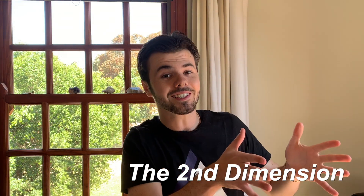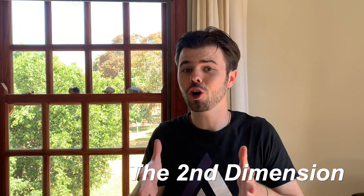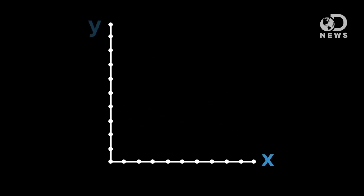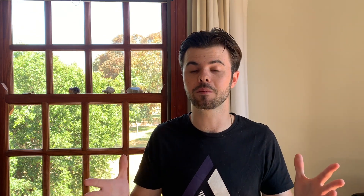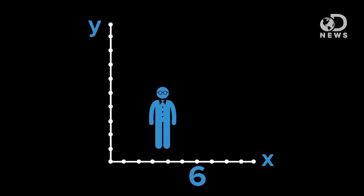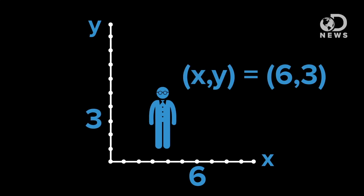Moving up to the second dimension, it's also pretty simple. We can move forward and back as well as up and down. We can move along two axes, thus giving us area, not just length. If the universe existed on the second dimension, we could plot our position like six and three, and we would know exactly where we are.